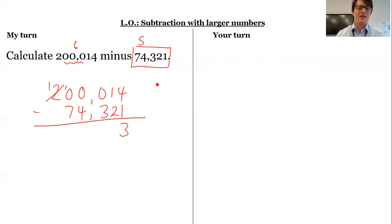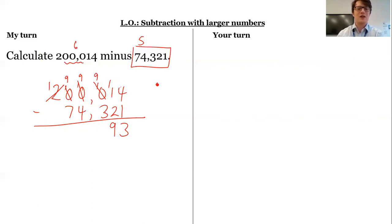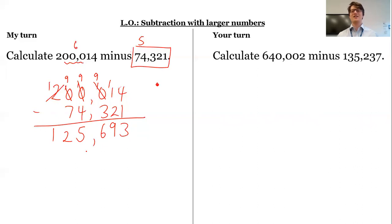Now I've got 10 ten-thousands. Take one ten-thousand, regroup it into 10 thousands. Take one thousand, regroup it into 10 hundreds. Now finally I can take one hundred, regroup it into 10 tens — so now I've got 11 tens. Subtract 2 is 9 tens. 9 subtract 3 is 6. 9 subtract 4 is 5. 9 subtract 7 is 2. And 1 subtract nothing is 1. One hundred and twenty-five thousand, six hundred and ninety-three.